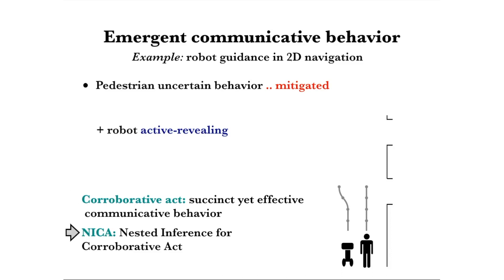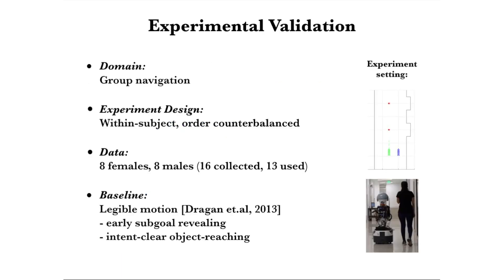We refer to such behavior as a collaborative act. The emergent communicative behavior is succinct: it takes care of its own performance while being effective for partner performance improvement. We refer to the overall planning technique as NICA, short for Nested Inference for Cooperative Act. We validate the approach through a human study with the robot guidance task in a public hallway environment. The stars symbolize the possible interest locations and only the robot knows where the final destination is. We use a within-subject design with 13 participants' data collected. We compare our approach to legible motion from 2013, which encourages early sub-goal information revealing.